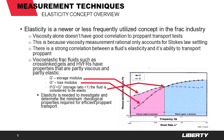There is, however, a strong correlation between a fluid's elasticity and its ability to transport proppant. Viscoelastic frac fluids have properties that are partly viscous and partly elastic. G' or storage modulus represents the elastic portion of the fluid's viscoelastic behavior. G'' or loss modulus represents the viscous portion of the fluid's viscoelastic behavior. If G' is greater than G'', or the storage ratio is greater than 1, the fluid is considered to be elastic. Elasticity is needed to investigate and determine the minimum rheological properties required for efficient proppant transport.